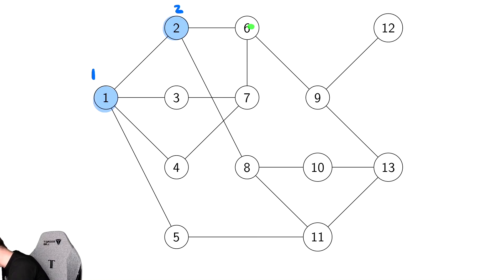From there, we have two options. We can discover 6 or 3. We're going to discover 6 because it's the next in numerical order. From there, we can discover 7, which gives a 4.